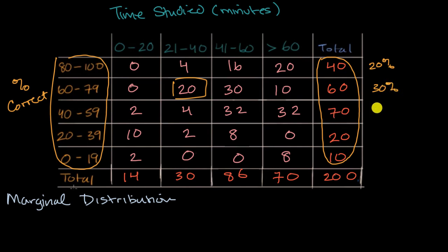70 out of 200, that would be 35 percent. 20 out of 200 is 10 percent, and 10 out of 200 is 5 percent. So this right over here in terms of percentages gives you the marginal distribution of the percent correct based on these buckets. So you could say 10 percent got between a 20 and a 39.